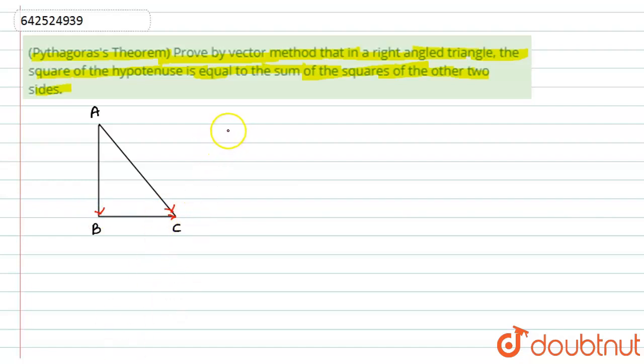In any triangle, the vector AC is nothing but equals the addition of the other two vectors, that is vector AB plus vector BC. Now here I will take the mod of vectors.